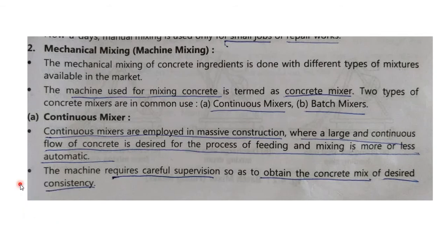This chapter is purely theoretical — it is like a narration only, so you can read it. We will read it and explain it, which will make it easy to understand. The mechanical mixing of concrete ingredients is done with different types of mixers available in the market. The machine used for mixing concrete is termed as a concrete mixer.